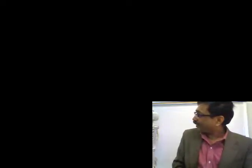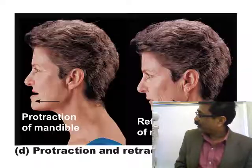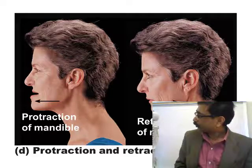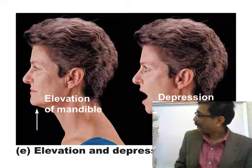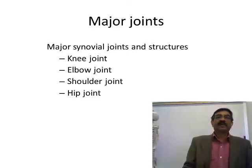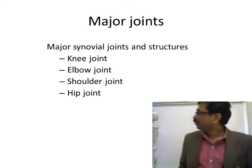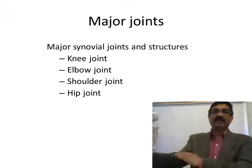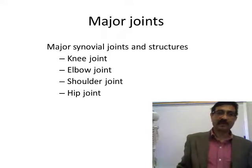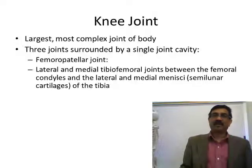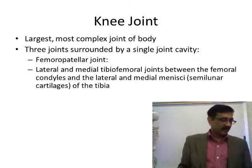Those are the different types of movements in different synovial joints in the body. Large synovial joints include the knee joint, shoulder joint, hip joint, and elbow joint. A lot of movement occurs in those joints. We will look at the structure of a couple of large synovial joints to understand what kinds of structures are found in and around them.